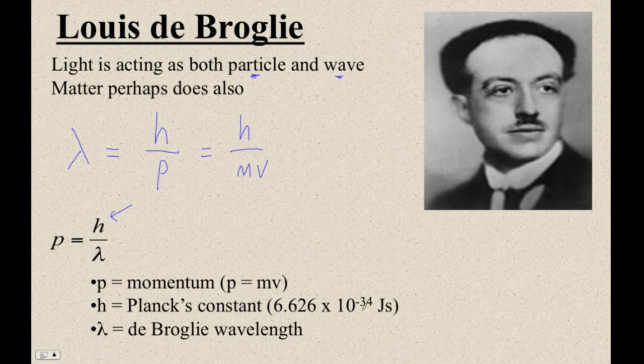If the denominator is one, the wavelength is 10 to the minus 34th, so that's such a small wavelength that for most things, big objects going fast, the de Broglie wavelength is so small that it can't be observed. Baseballs don't really have a lot of wave behavior.